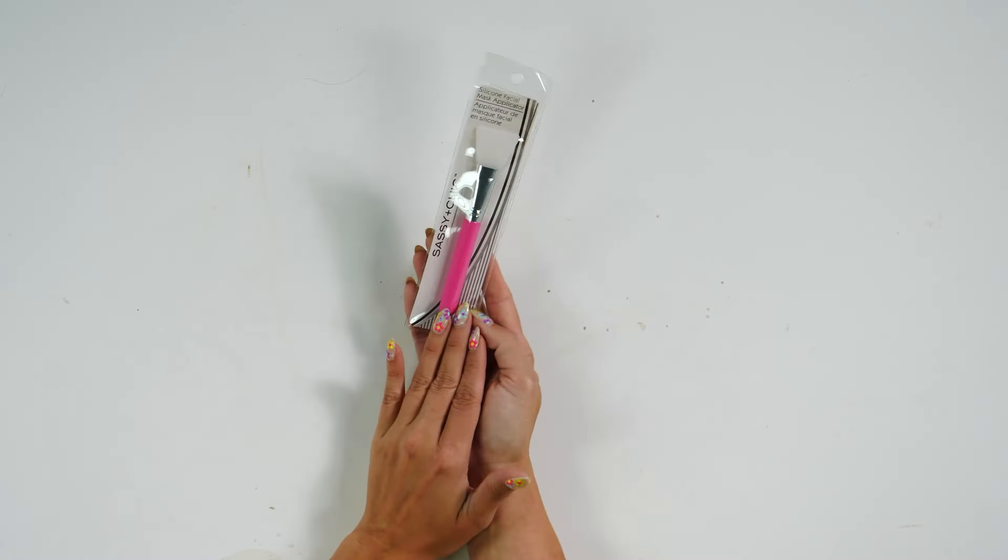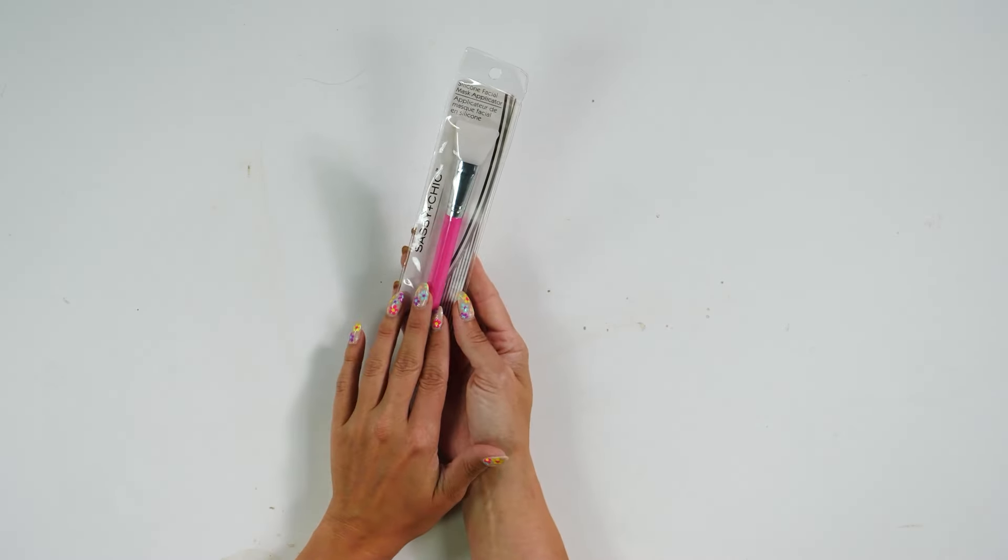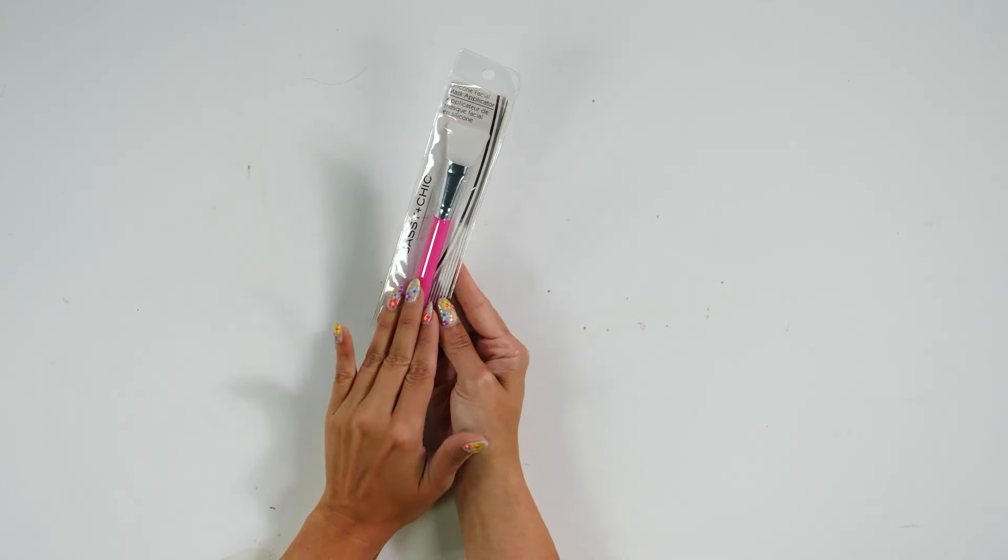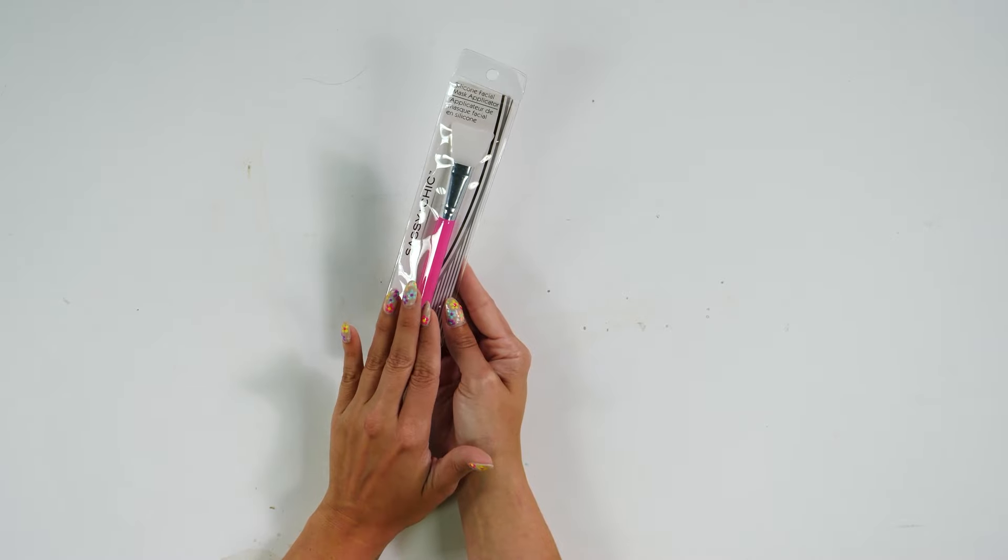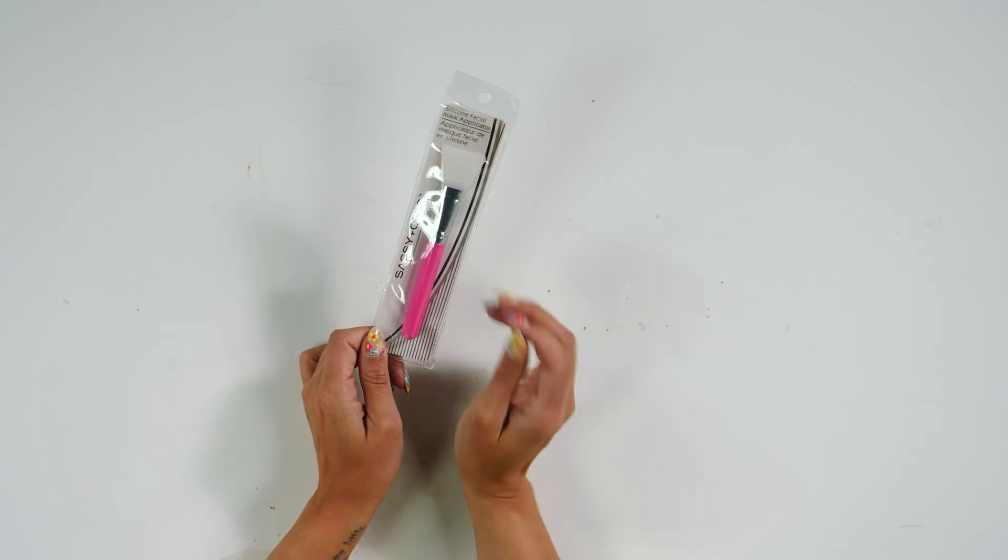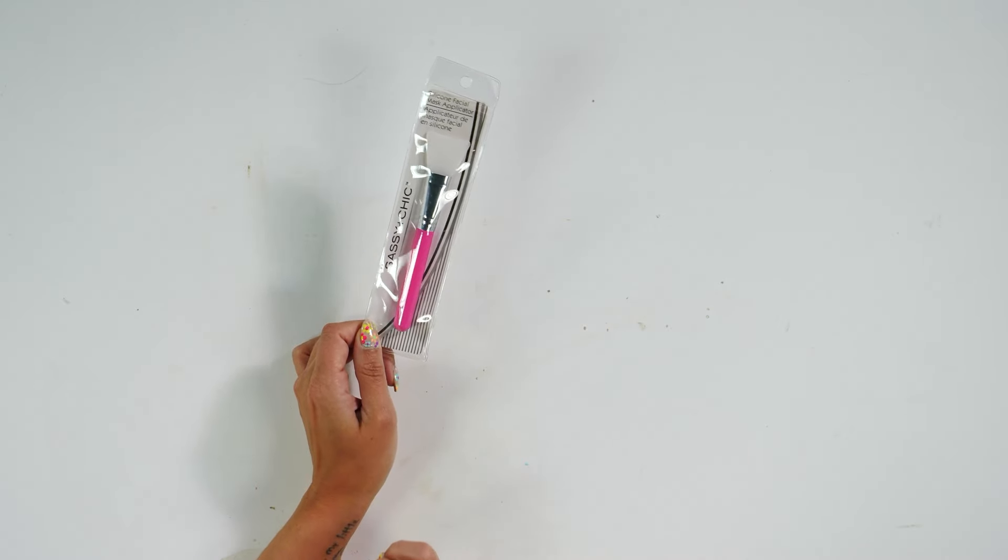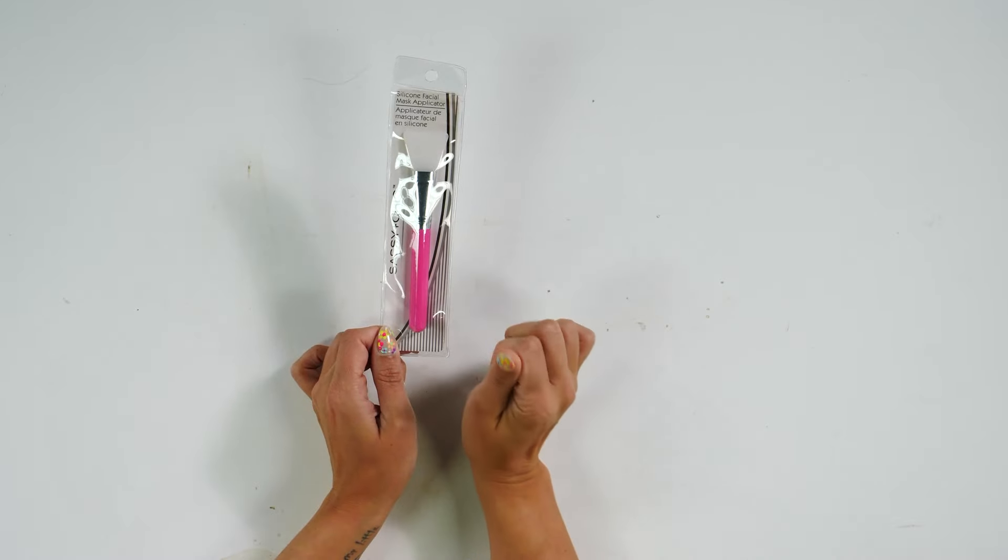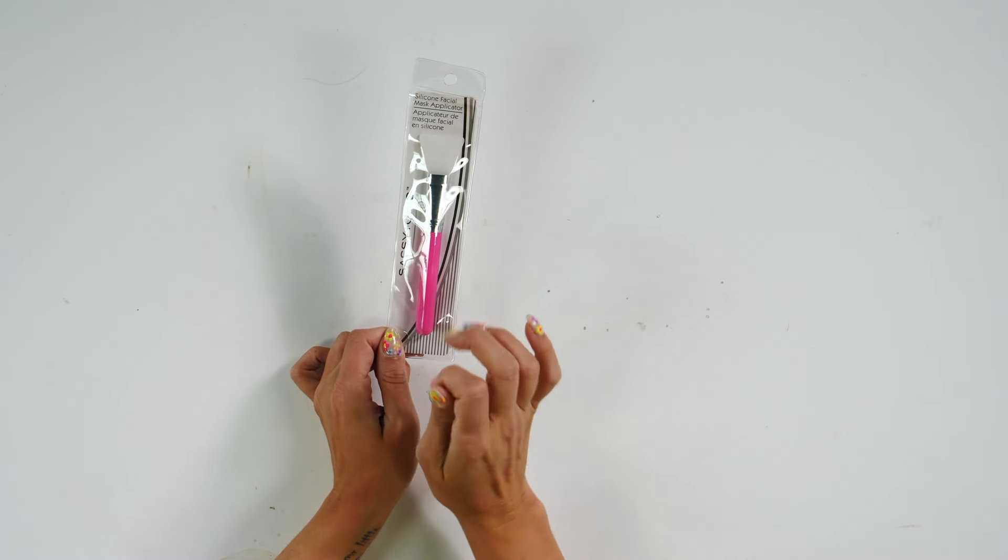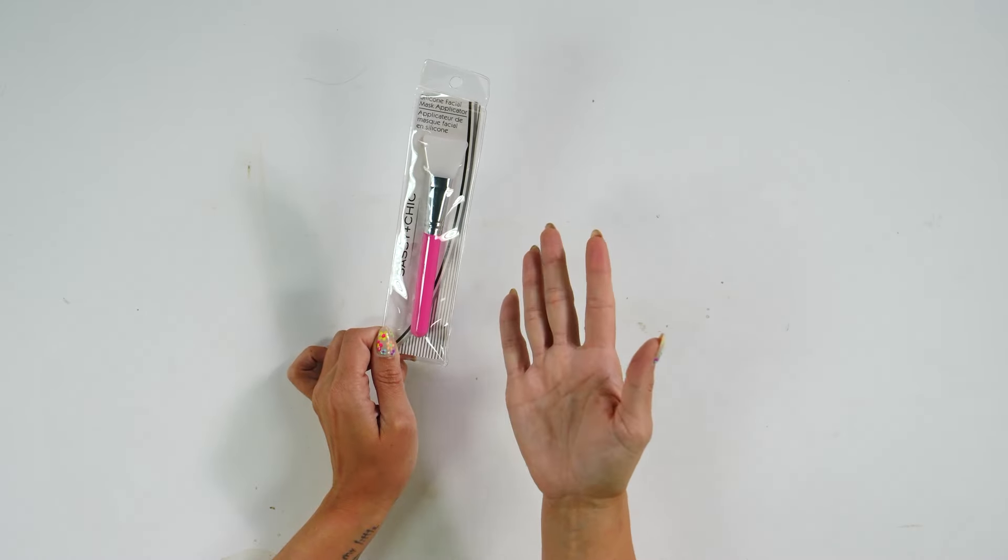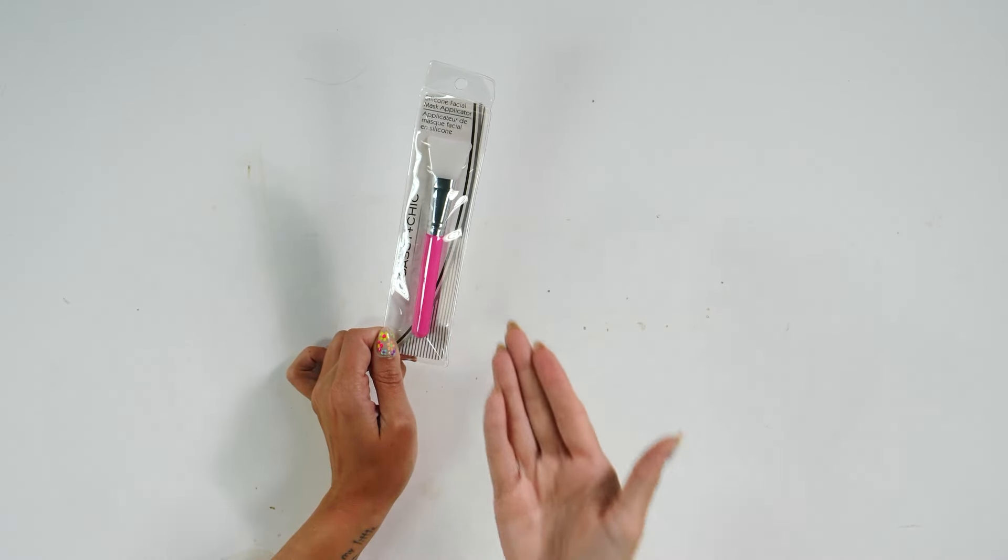These next three items I'm going to show you are found in the beauty section. The first one is this silicone facial mask applicator. This is great for spreading glue or resin on projects, especially if you need a thin layer and especially if you do not like the feel. I know some of us have sensory issues, and it can sometimes freak me out feeling glue. Sometimes I love it, sometimes I don't.